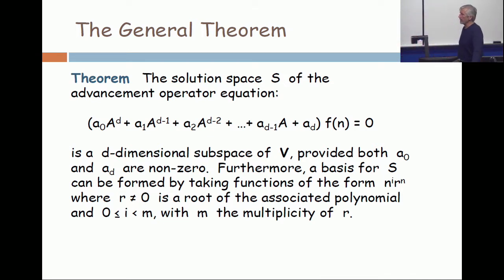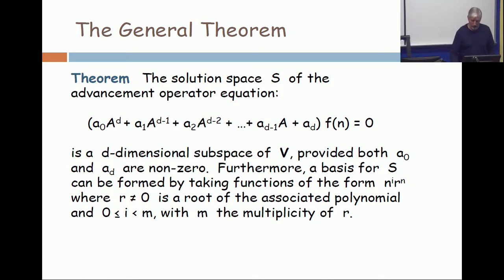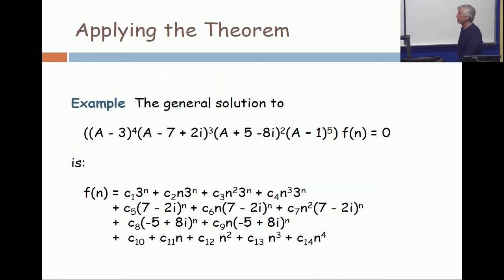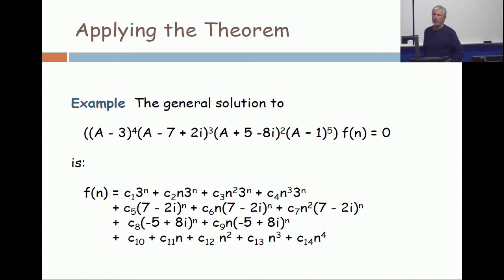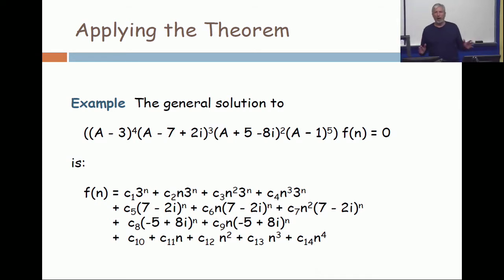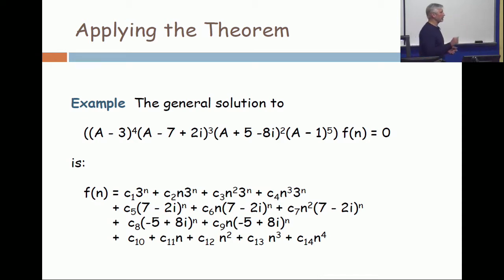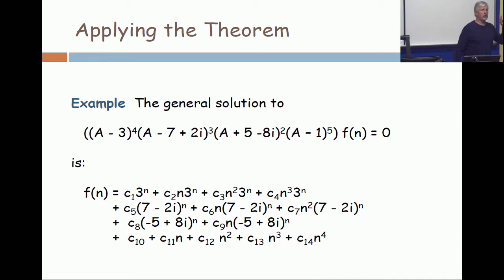It's somewhere between zero and m minus 1. That's the statement of the theorem. Now, you're already beginning to glaze over, and we're only five minutes into the class. So let's take a concrete example. This is the same example that I put up last time, but I've got one more factor added to it. If you don't understand the significance of that general theorem, this slide should make complete sense to you.